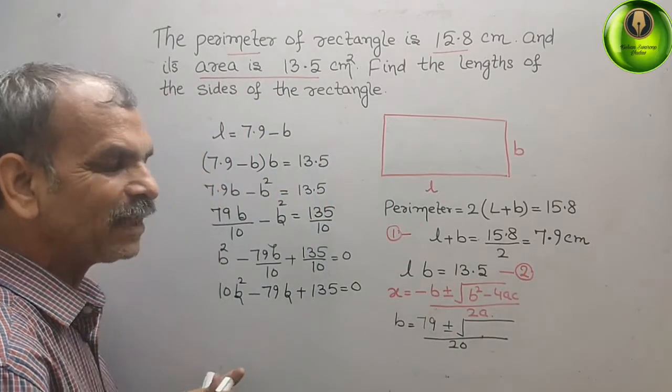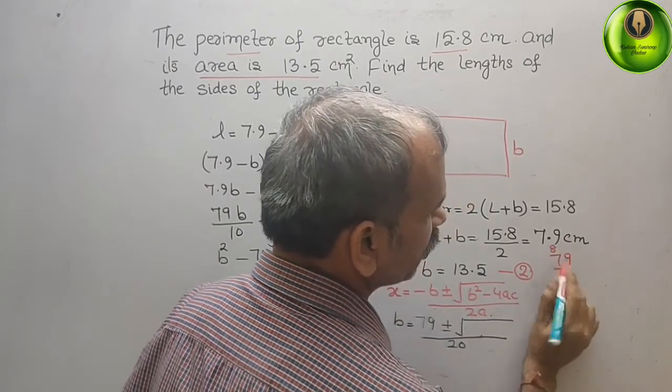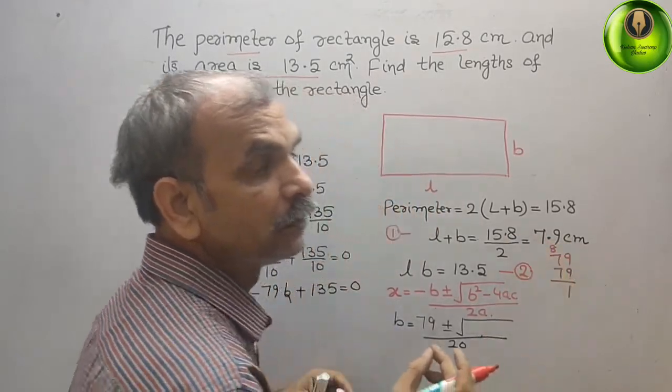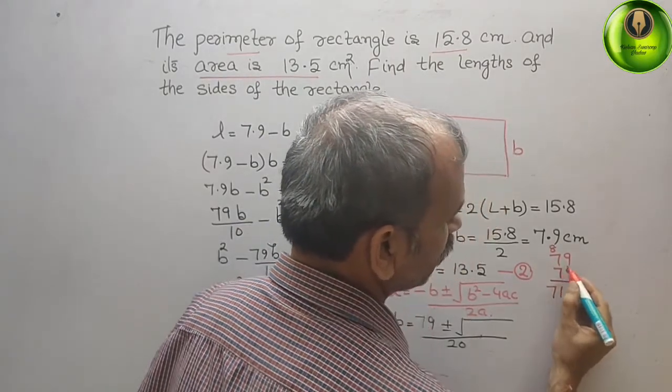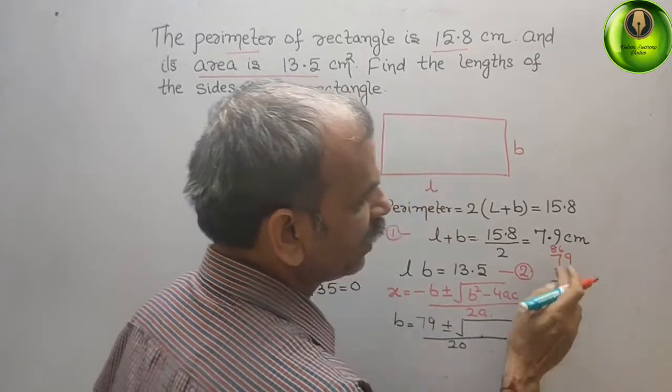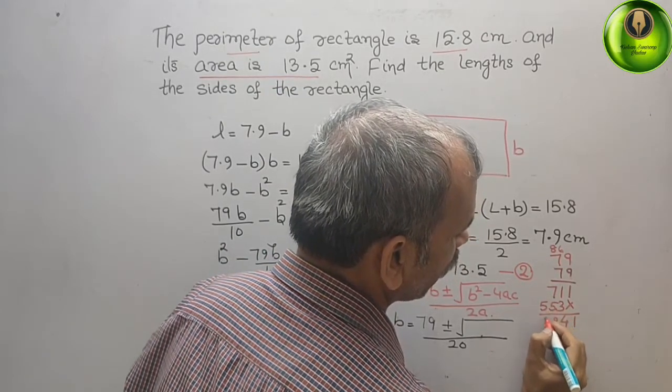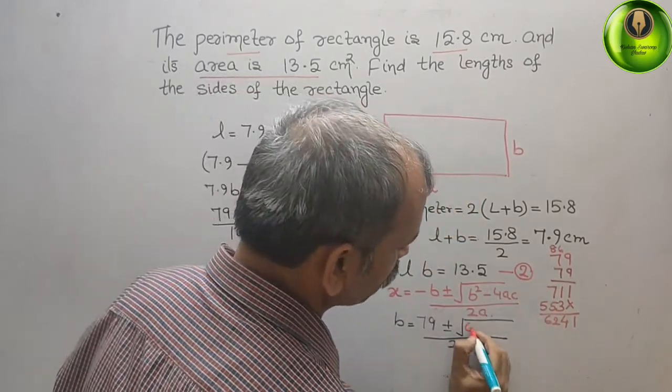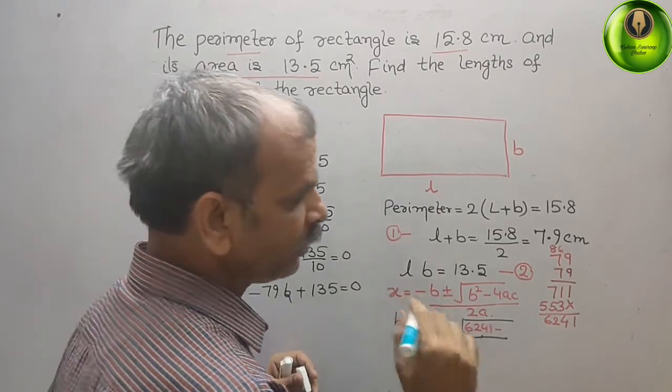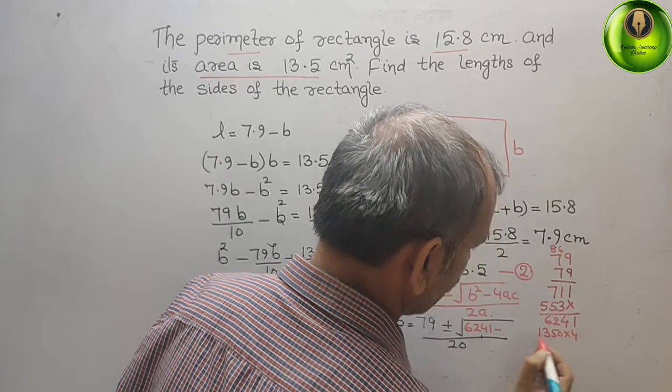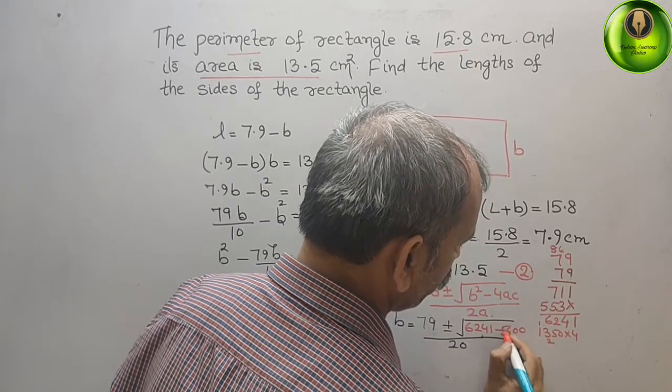B square. So, 79 square is what? 79 into 79. 81, 8 carry 63 plus 8. 63 plus 8 is 71. Now, from 7, 63, 6 carry 49, 55. We will get 1, 4, 12, 1 carry is 6, 2, 4, 1. So, here you will get 6, 2, 4, 1 minus 4 into this value. 1, 3, 5, 0. 4 into 1, 3, 5, 0. 4 into 4. That is equal to 0, 20, 2 carry, 12, 14, 1 carry, and 5. 5, 4, 0, 0.